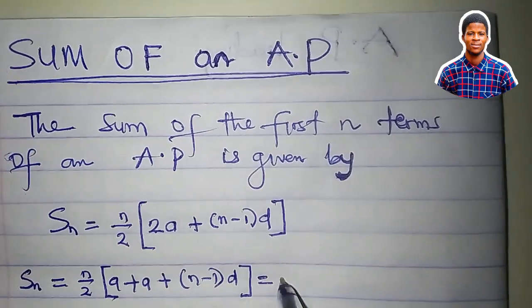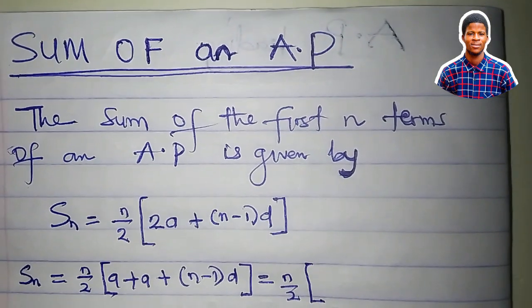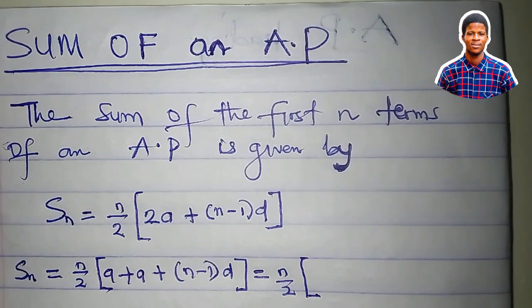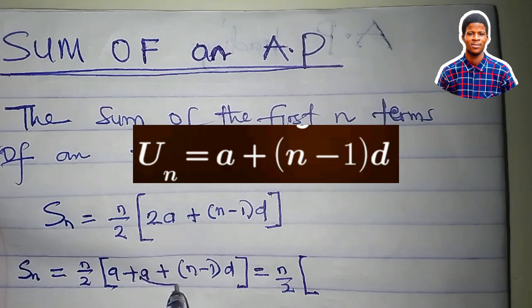This is n over 2, all in brackets. Remember the nth term formula for an AP: u_n equals a plus (n-1)d. That's exactly what I have here.